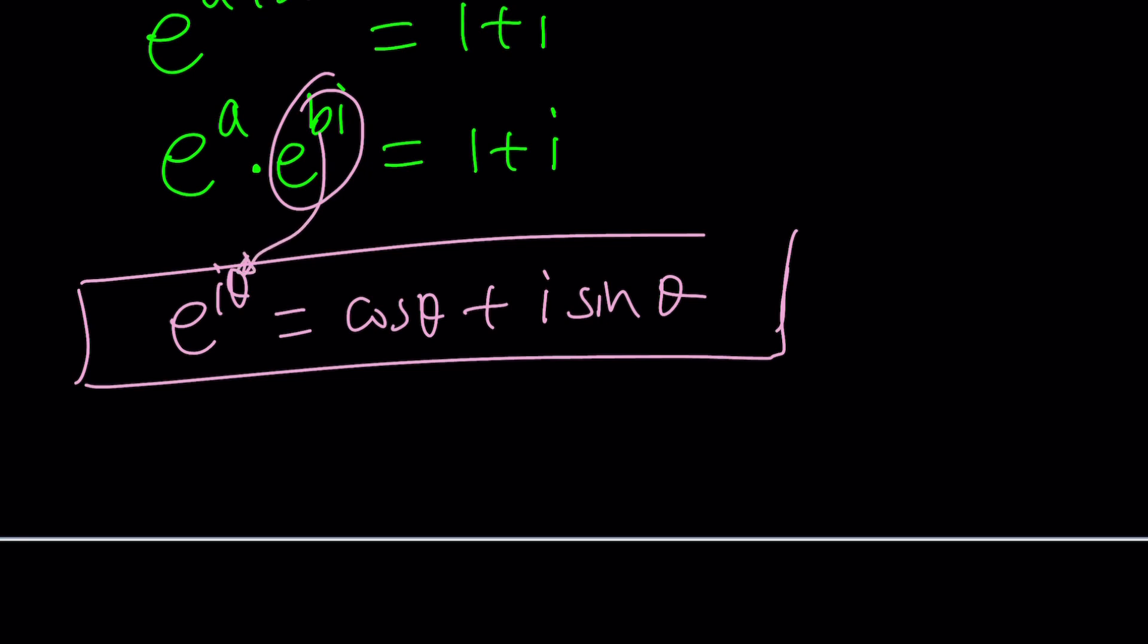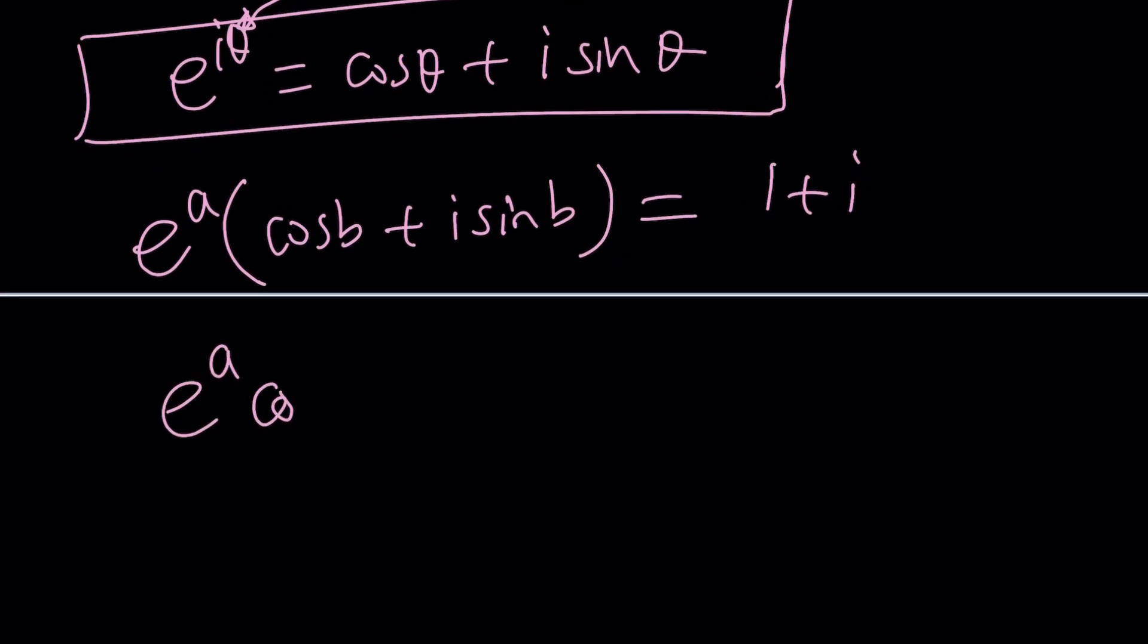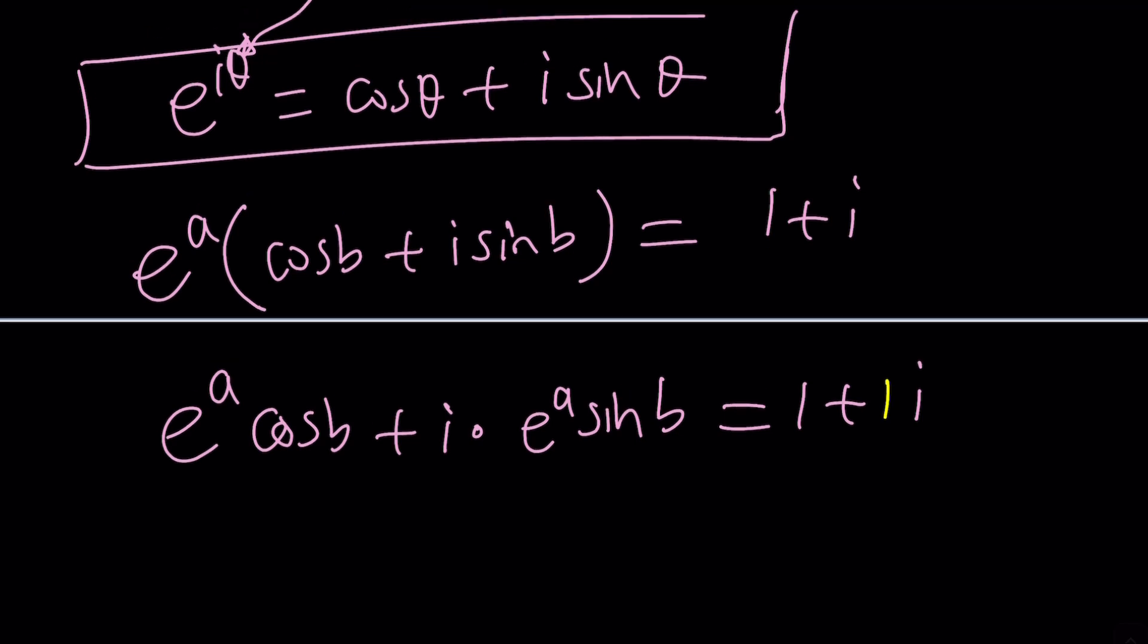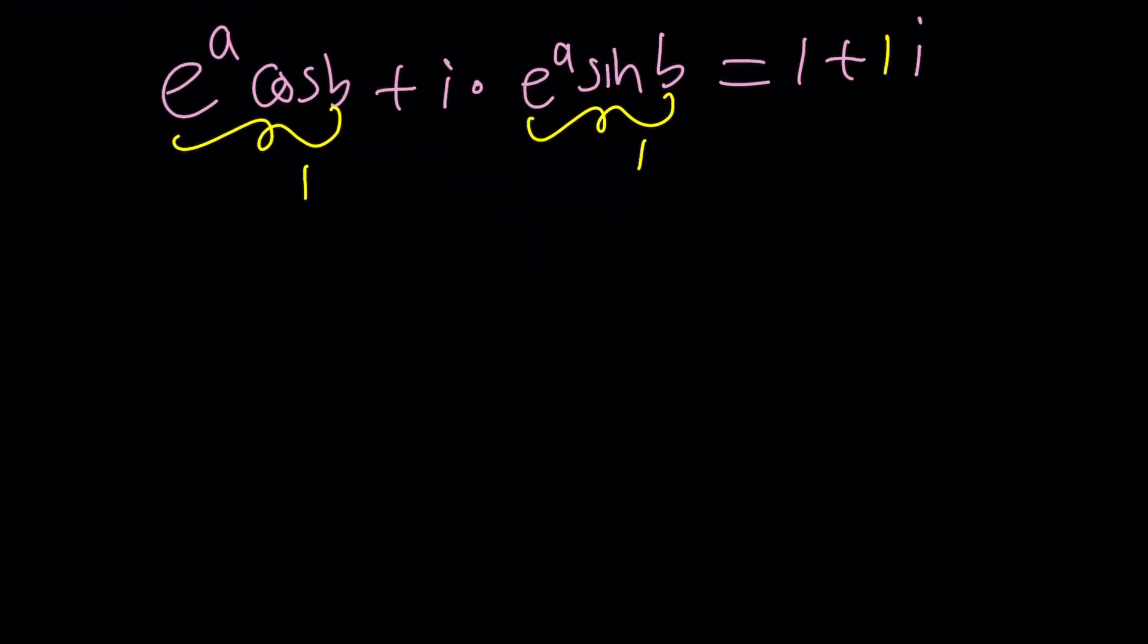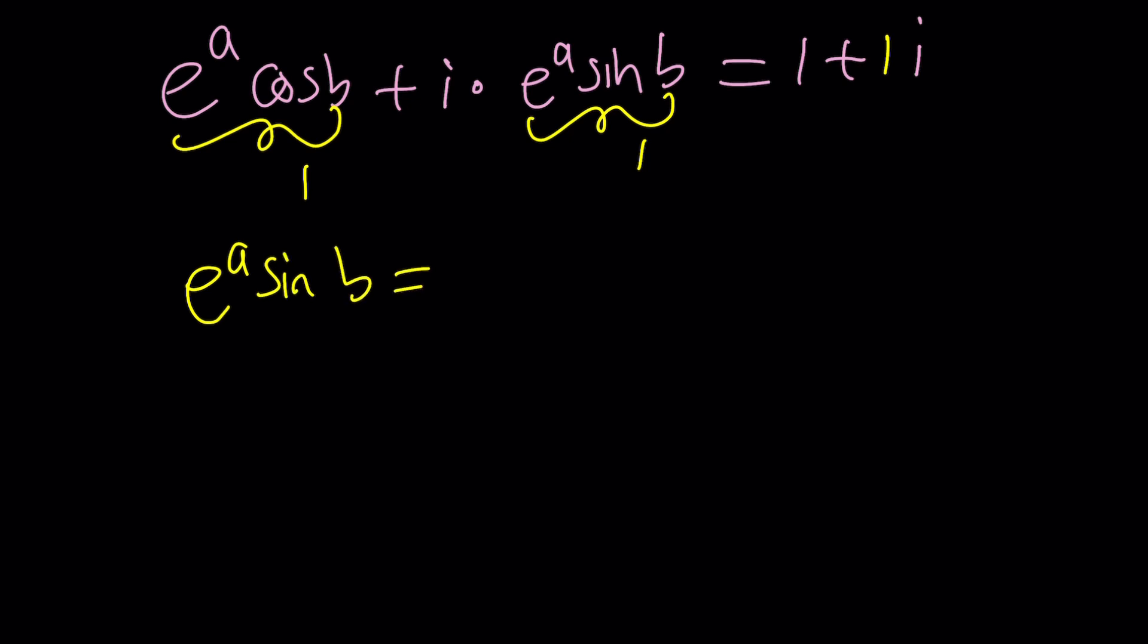now, we're going to go ahead and replace this with what? θ is now replaced with b. So e^(ib) becomes cos b + i sin b. So we get e^a multiplied by (cos b + i sin b). And that's equal to 1+i. And now we're going to go ahead and distribute e^a cos b + i times e^a sin b equals 1+i. 1+i means 1 + 1i, by the way. So this is 1 and this is 1. That's interesting, right? Now we get a system of equations. How beautiful is that? e^a sin b is equal to 1. e^a cos b is equal to 1, which means they're equal. Or you can divide them like this. e^a is going to cancel out. You get tan b = 1.